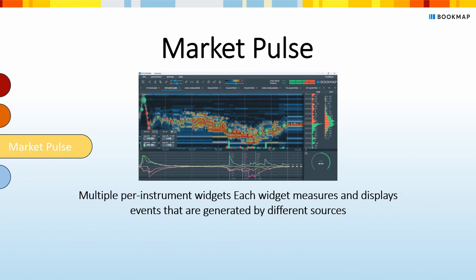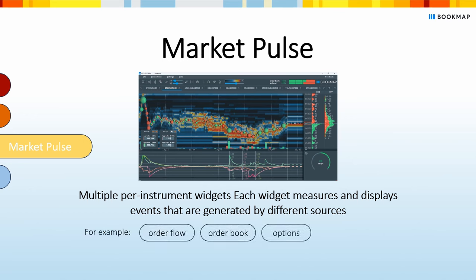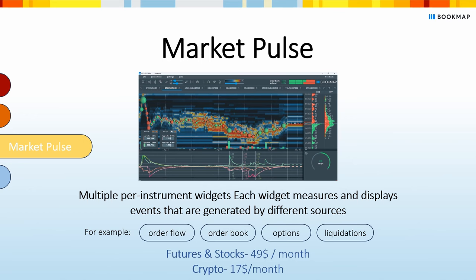The MarketPulse add-on consists of multiple pair-instrument widgets. Each widget measures and displays events generated by different sources — for example, order flow, order book, options, and liquidations. MarketPulse allows you to monitor multiple instruments and gain a better understanding of market behavior all in one place. You can get all the widgets on the marketplace for $49 per month for futures and stocks, and $17 per month for crypto.